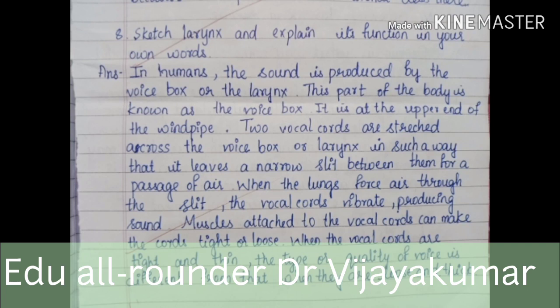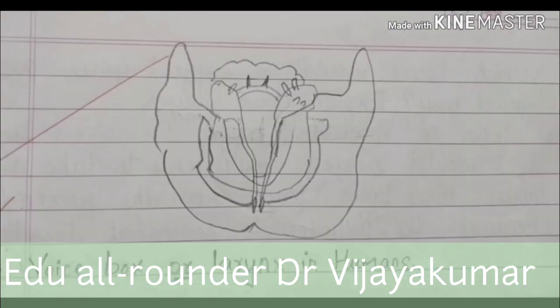Sketch the larynx and explain its functions. In humans, sound is produced by the voice box or the larynx, located at the upper end of the windpipe. Two vocal cords are stretched across the larynx, leaving a narrow slit for the passage of air. When the lungs force air through the slit, the vocal cords vibrate, producing sound. Muscles attached to the vocal cords can make them tight or loose, changing the quality of voice. See the diagram of the voice box or larynx in humans.